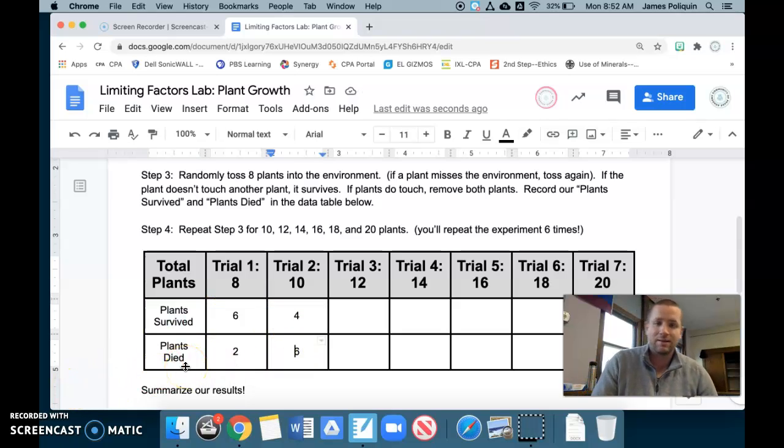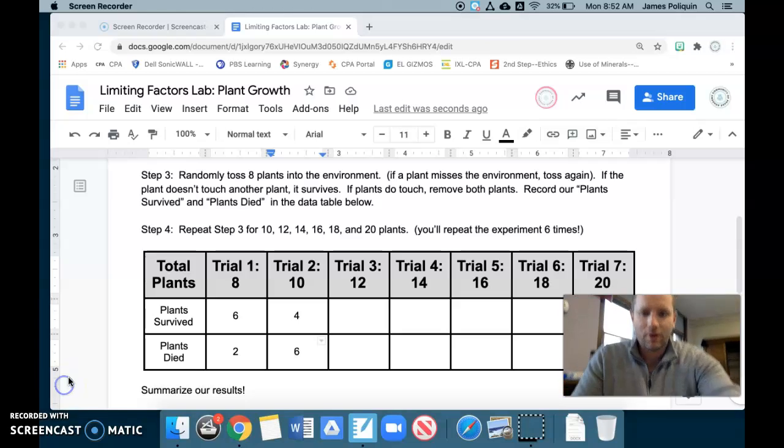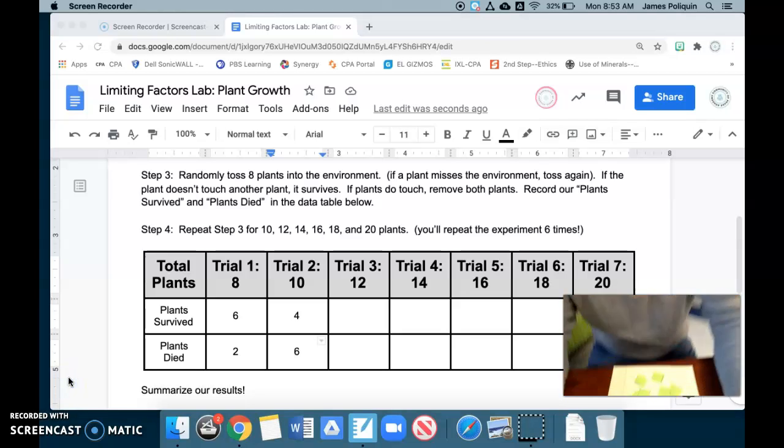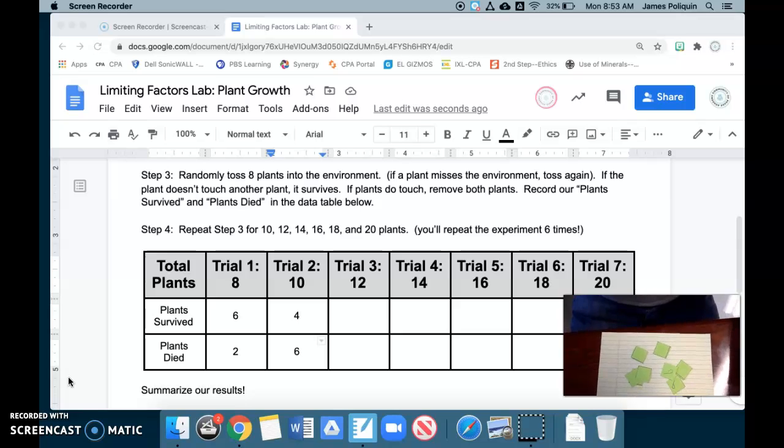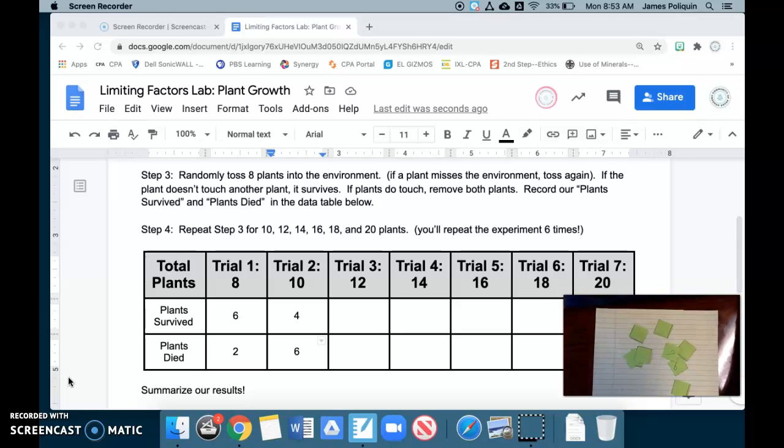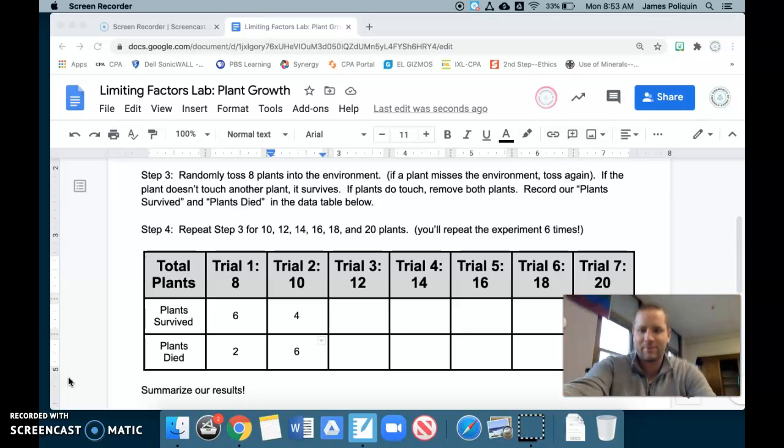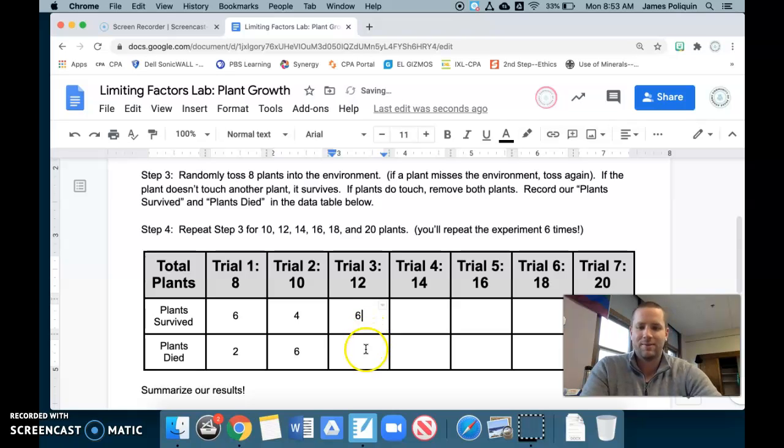Now I'm going to repeat for trial three with 12 plants. Trial three's in the books. Let's take a look. Check it out. 12 plants in. One, two, three, four, five, six survived. The other six died. There's some overlap and touching with the other six. So six plants survived. Six plants died.